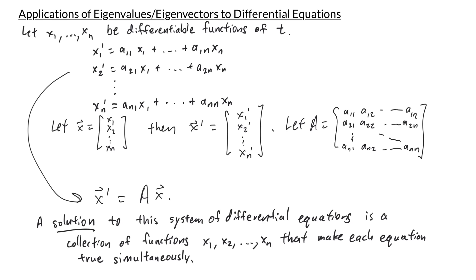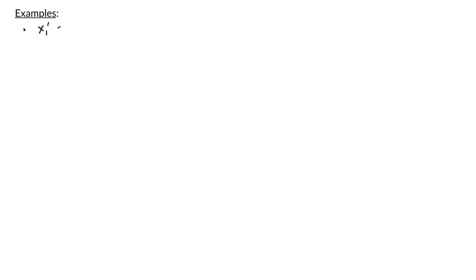A solution to the system is a collection of functions x1, x2, …, xn that make each of the equations true simultaneously. Our goal is to find solutions to these systems. Let's start with some easy examples — first, just one function and one equation: x1' = 5x1.